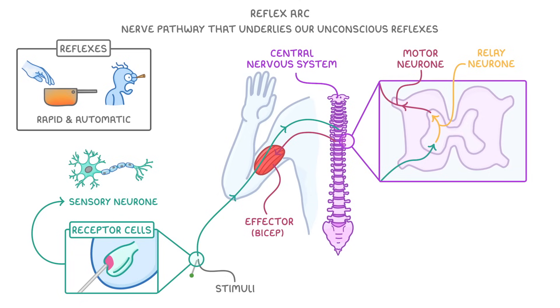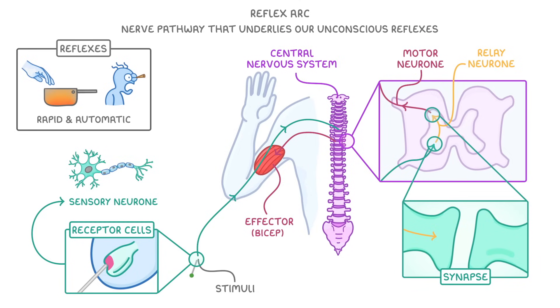Remember that between each of the different neurons there will be synapses, where the electrical signal is temporarily converted to a chemical signal, so that it can be passed between the different nerve cells.